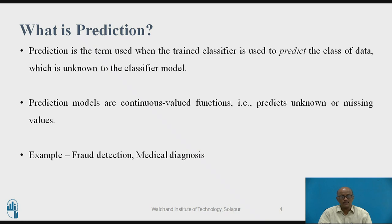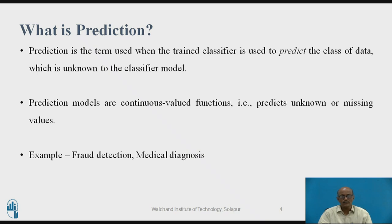Prediction is the term used when a trained classifier is used to predict the class of data which is unknown to the classifier model. Prediction models are continuous-valued functions that predict unknown or missing values — for example, fraud detection or medical diagnosis. In medical diagnosis, if a patient is suffering from a particular disease such as cancer, based on the symptoms, we can classify and predict whether the patient should receive treatment A, B, or C.